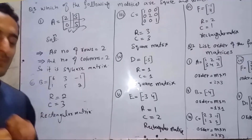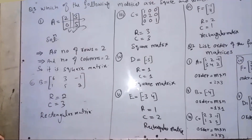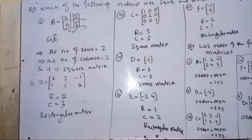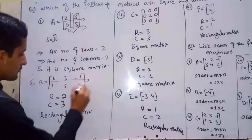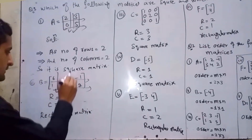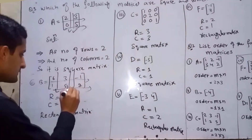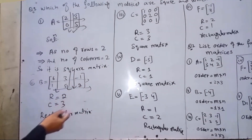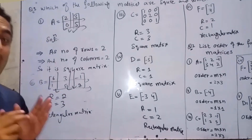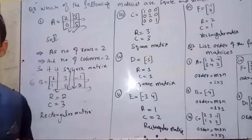Part b: B = [[6, 3, -1], [1, 5, 2]]. Number of rows = 2, number of columns = 3. This is a rectangular matrix because number of rows is not equal to number of columns — that is a rectangular matrix.